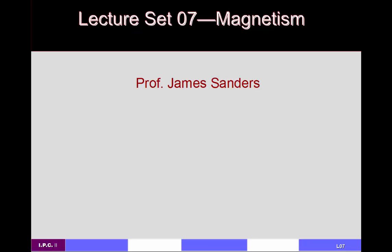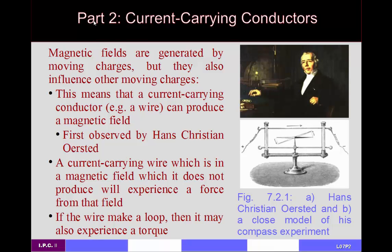Hi and welcome again to my physics online video lecture supplement series. Today's video continues my lecture set discussing magnetism and we are in part two, which is about current-carrying conductors. In the previous set of lectures I talked about how magnetic fields affect moving charges. Today we're going to talk about how a magnetic field might be generated by a moving charge, describing the form of the electric field generated by a current-carrying conductor.